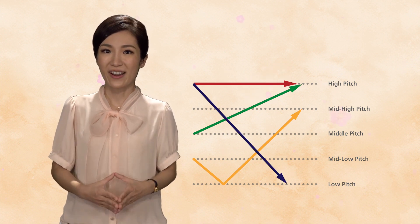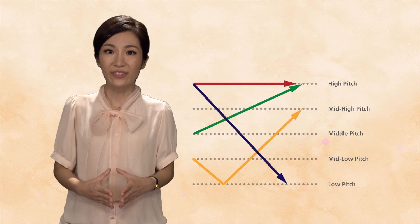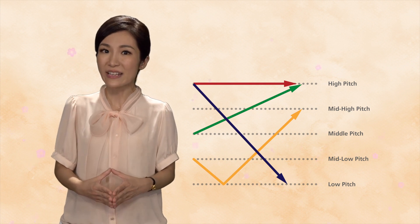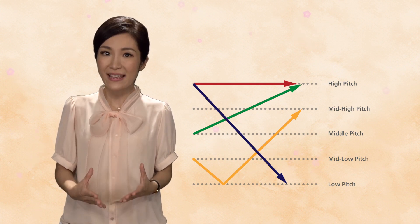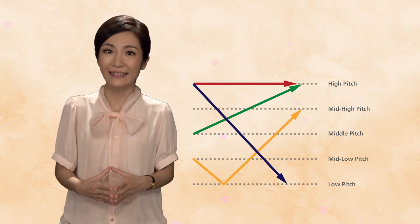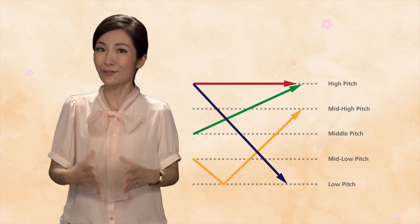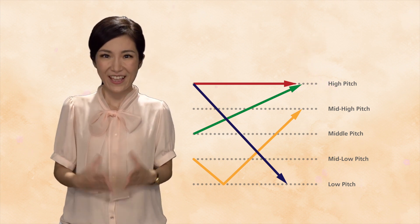Remember, each time you say a syllable in a different tone, you are making a completely different word. Cool, right? Try one more. Now let's move from sets of syllables and practice our tones by learning the Chinese names for some common beverages.